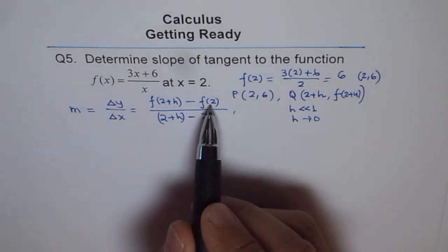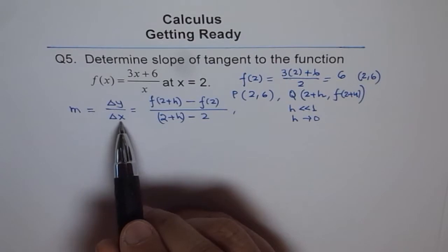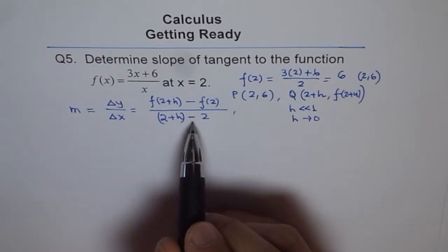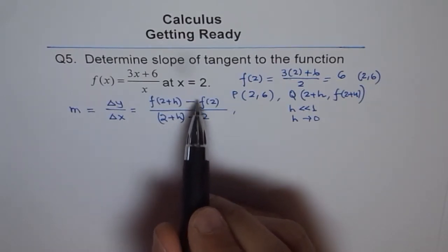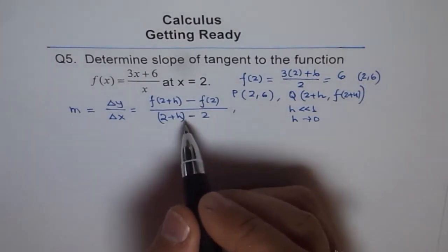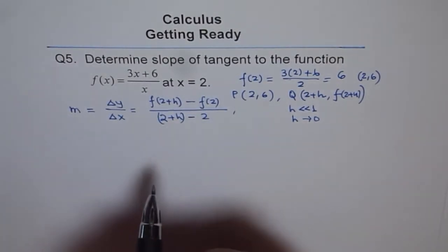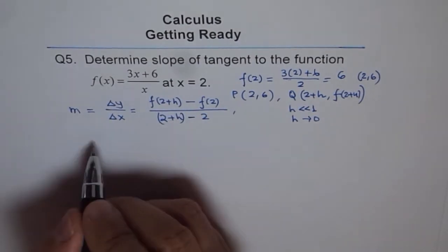We can write this general equation here as f(2 + h) minus f(2), the value at 2, divided by the x difference which is (2 + h) minus 2, where we are saying h is very very small as compared to 1, but it is approaching 0. Do you understand this statement? f(2 + h) means y value at x equals (2 + h).